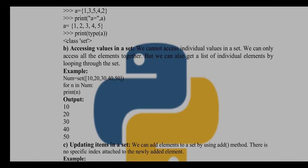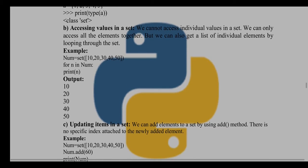Next, accessing values in a set: we cannot access individual values in a set. We can only access all elements together, but we can also get a list of individual elements by looping through the set. We cannot access a single element because we don't have index position, but we can access all the elements by applying for loop or any loop.